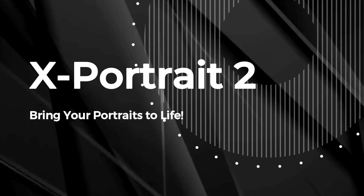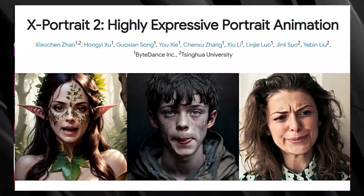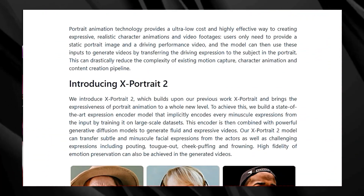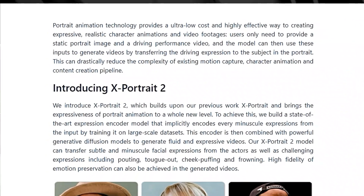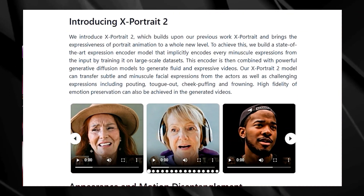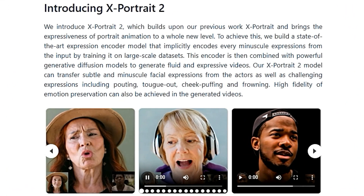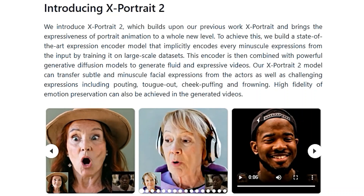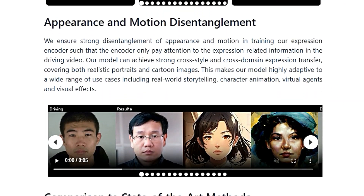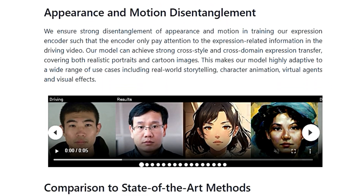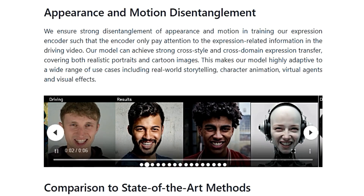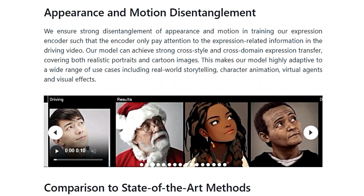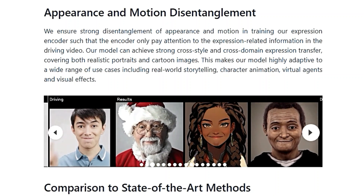Paper number nine: X-Portrait 2 — bring your portraits to life. X-Portrait 2: Highly Expressive Portrait Animation introduces an amazing technology that can animate any portrait image using a video as a guide. Imagine taking a still photo of yourself or a friend and bringing it to life, complete with realistic facial expressions and movements, all based on an entirely separate video. What makes this technology so special is its ability to capture and transfer even the smallest details of facial expressions — from subtle eyebrow raises to full-blown cheek-puffing and tongue-out expressions. X-Portrait 2 uses a powerful expression encoder trained on a huge dataset of images and videos, allowing the model to understand and reproduce the nuances of human expression with incredible accuracy.